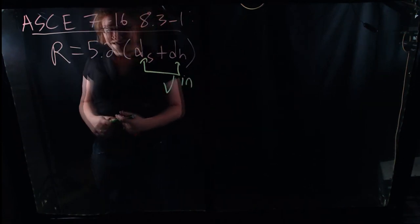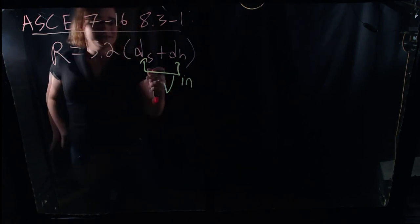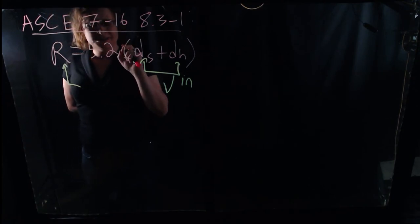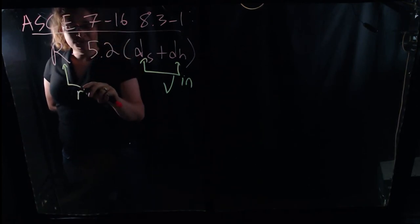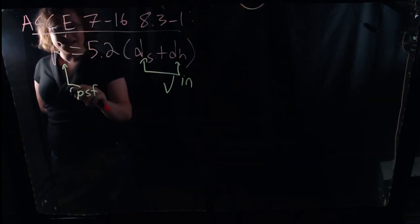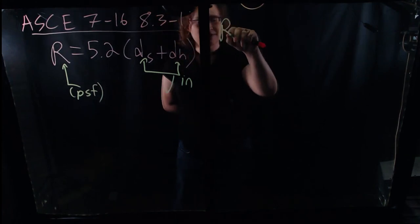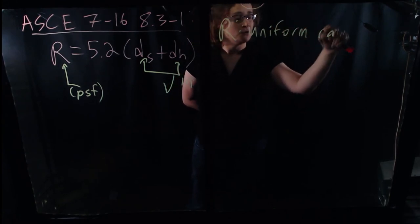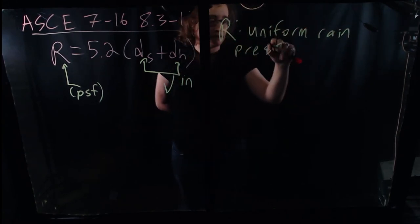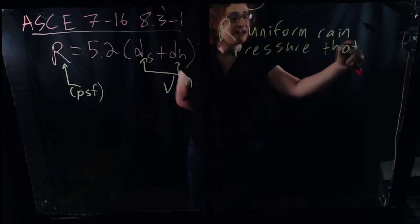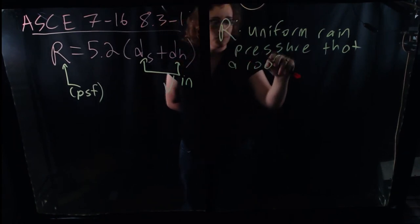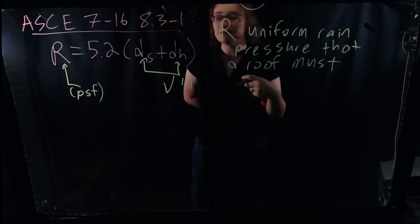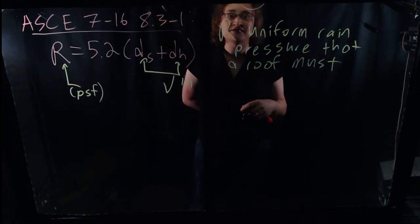The same thing applies with almost all the equations in ASCE 7 — you can just calculate through some simple conversions. It is the American Society of Civil Engineers provisions, so we use English units. DS and DH are in inches. R is going to be a uniform pressure load, and it's in units of PSF. R is the uniform rain pressure that a roof must be designed for. This is the R that in turn will be used in the various ASCE 7 LRFD or ASD load combinations.